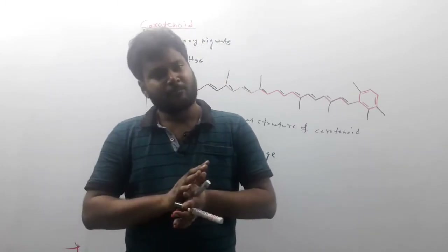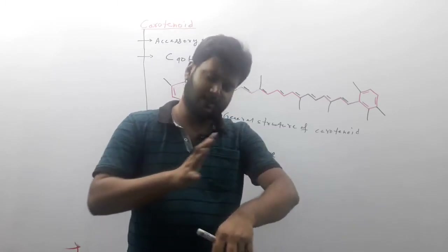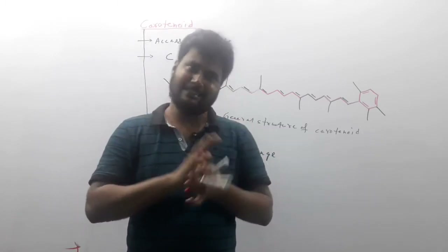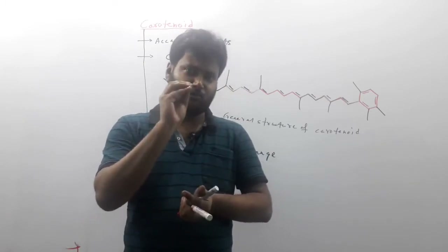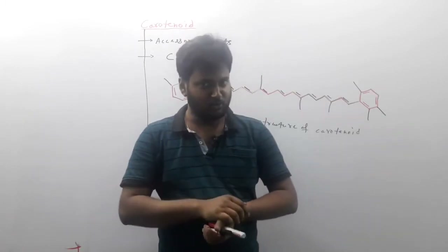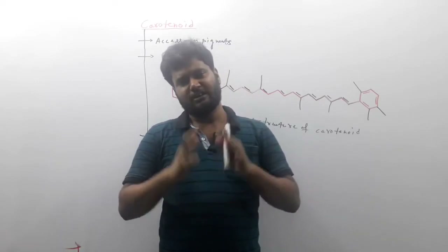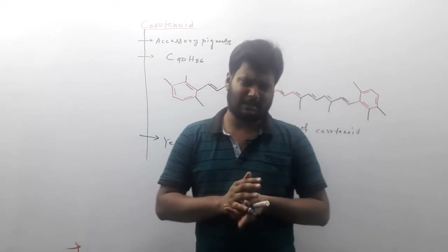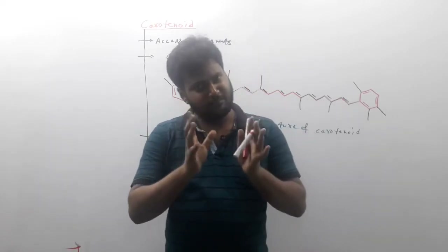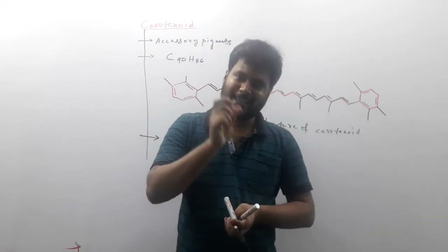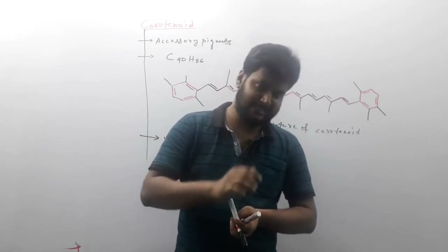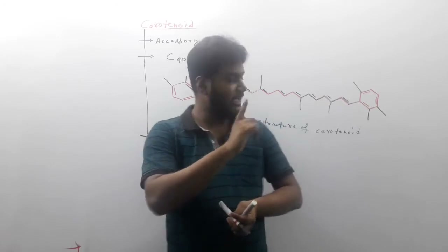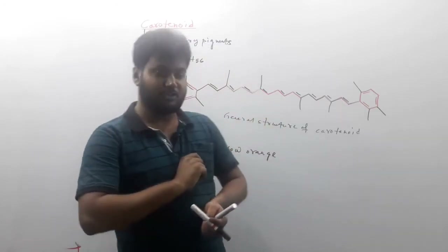In animals, we can see these colors too — like canaries, flamingos, and different types of feathers showing yellow, orange, and red colors. Even the yellow color of egg yolk is due to xanthophyll. Xanthophyll is one type of oxygenated carotenoid pigment.